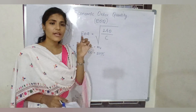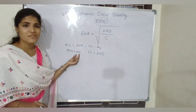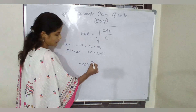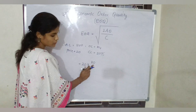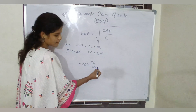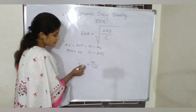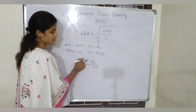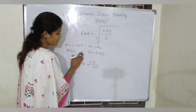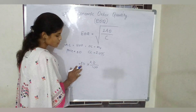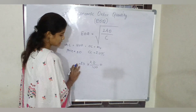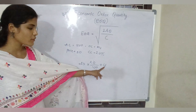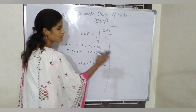In any EOQ question, carrying cost will be given as a percentage. You need to convert it to a number using the price. So here: price is 20, carrying cost percentage is 20%, so carrying cost = 20 × 20 / 100 = 4. If they had given 10% you'd use 10/100, or 50% you'd use 50/100, like that.